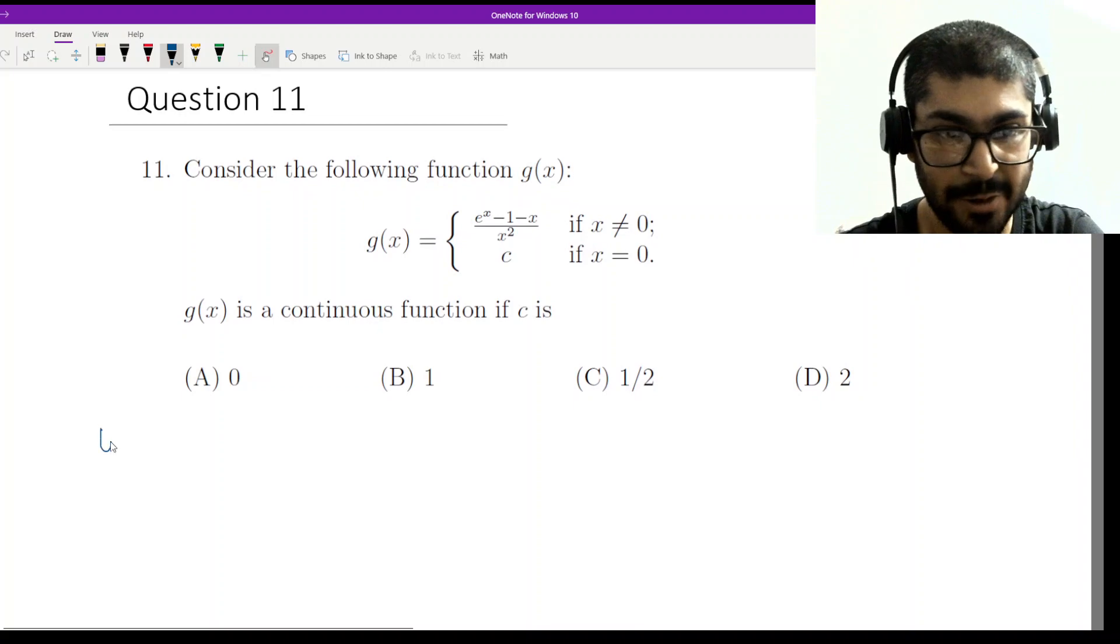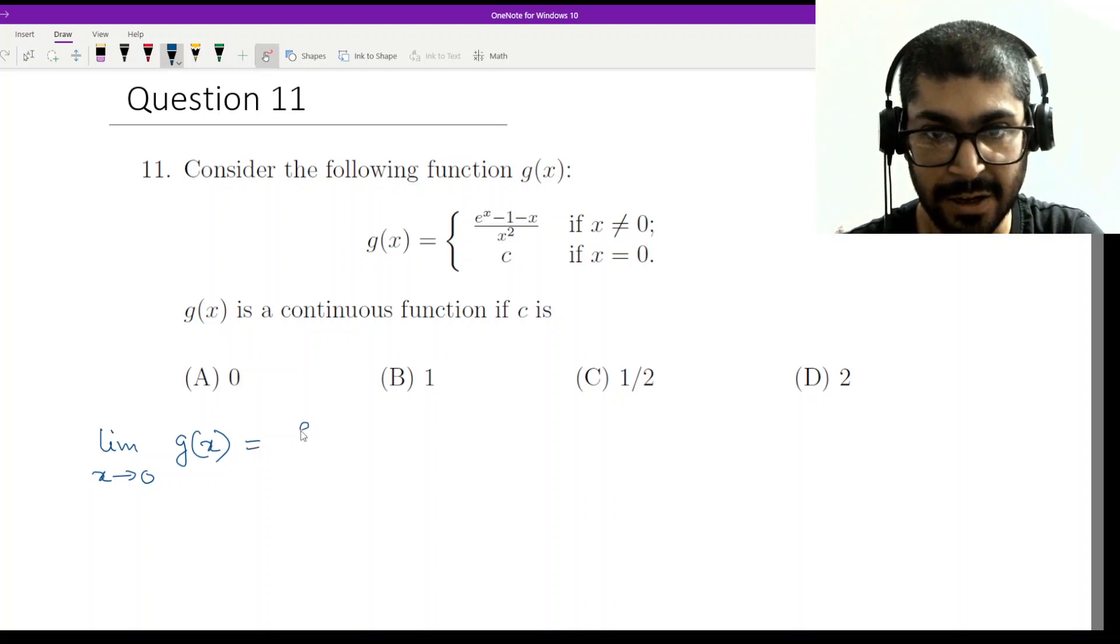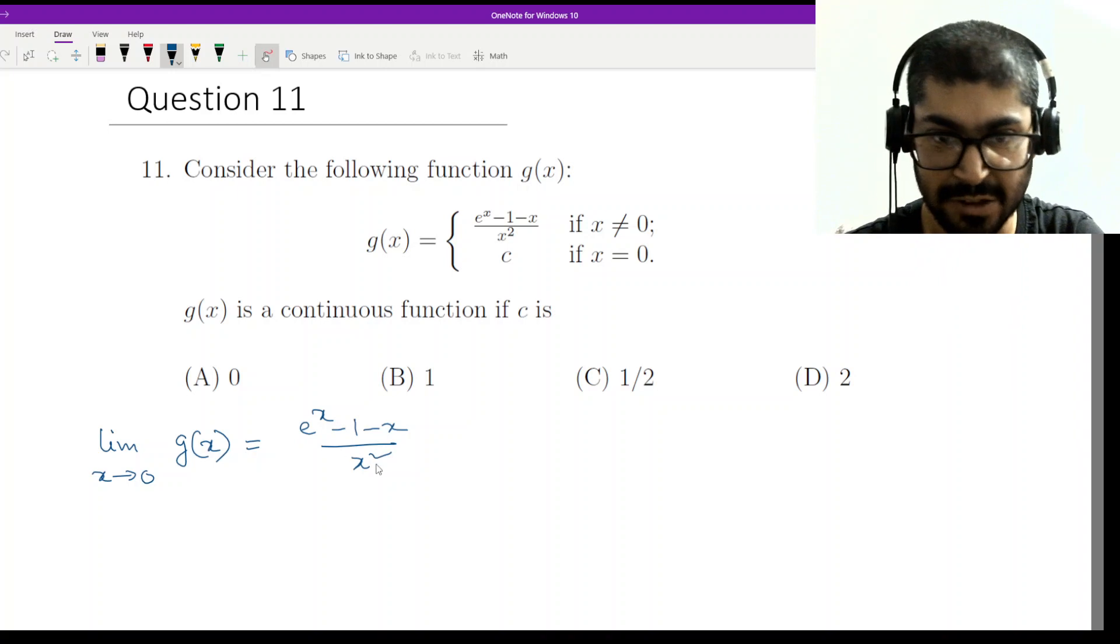So we just have to calculate limit x tends to 0 g(x), which is equal to e to the power x minus 1 minus x by x squared. Now at 0, this is e to the power 0, 1 minus 1, 0 minus 0, 0 by 0 form.